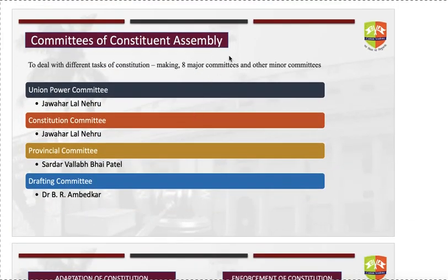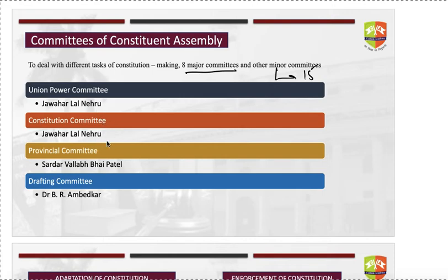To handle different works of the Constituent Assembly, committees were formed. There were 8 major committees and 15 minor committees. Among the important ones: the Union Power Committee and Constitution Committee were headed by Jawaharlal Nehru; the Provincial Committee — responsible for discussions with different provinces to bring them into the Indian Union — was headed by Sardar Vallabhbhai Patel, who persuaded provincial states to join.